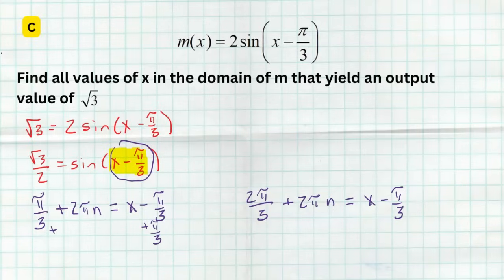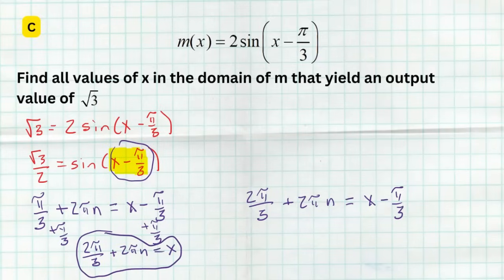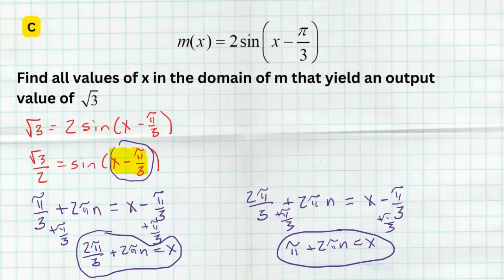Now add π/3 to each side of both equations. For the first: (π/3) + (π/3) = 2π/3, giving x = 2π/3 + 2πn. For the second: (2π/3) + (π/3) = 3π/3 = π, giving x = π + 2πn. Those are my two solutions representing the infinite solutions to this equation.